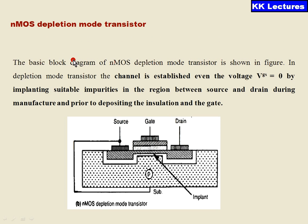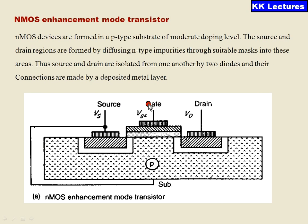Now, coming to the NMOS depletion mode transistor, the difference between enhancement mode and depletion mode is that the channel is already formed between source and drain in the depletion mode transistor, whereas there is no channel in the enhancement mode. Whenever a positive voltage is applied on the gate of an NMOS enhancement mode transistor, the positive charges are repelled and negative charges accumulate near the gate, forming a channel between source and drain.